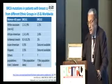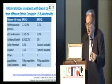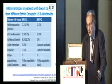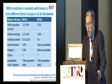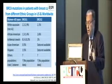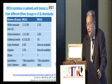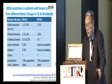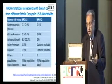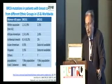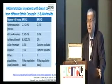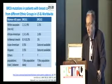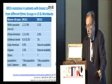Looking at BRCA mutations in breast cancer patients by ethnic background in the United States and Europe: white Caucasians, about 2.2% BRCA1 and 2.1% BRCA2. African Americans have 1.3% BRCA1, higher rate of BRCA2. Ashkenazi Jews have the highest BRCA1, about 10% chance of having a mutation. Asian Americans, much lower at 0.5%. Hispanics report BRCA1 at 3.5%. For the Arab population, we do not know — we do not have large data.